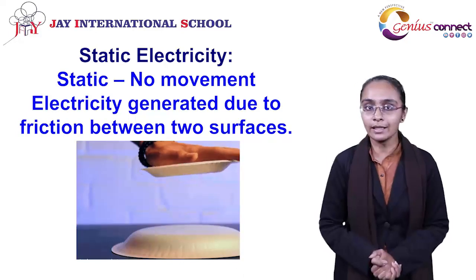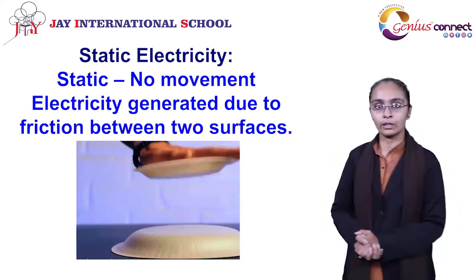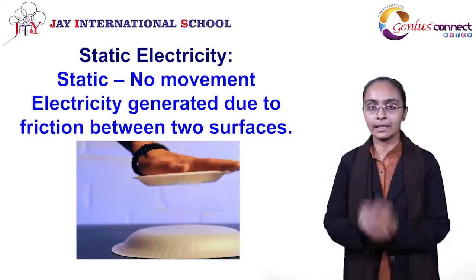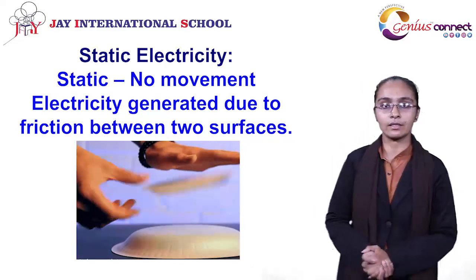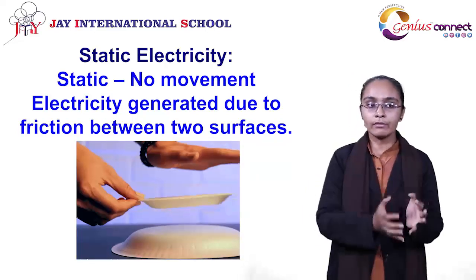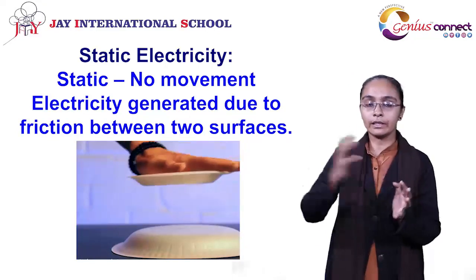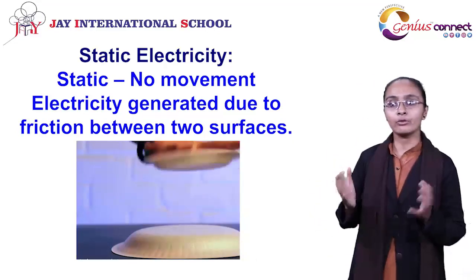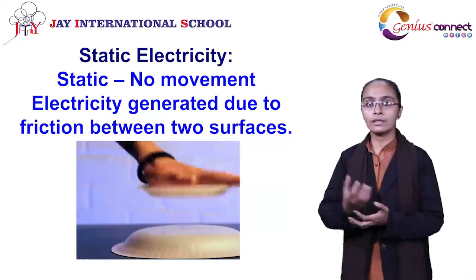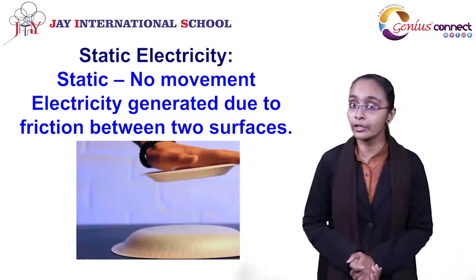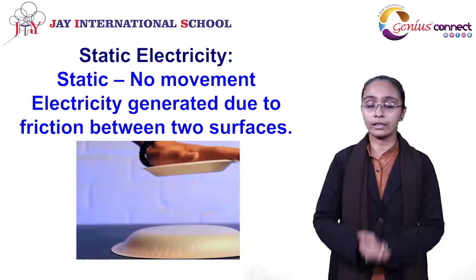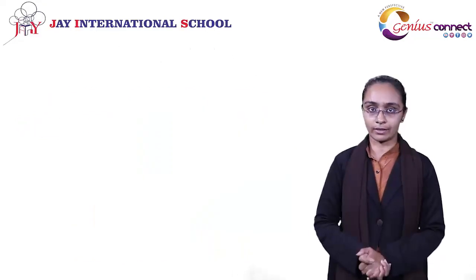When we consider static electricity, static means when the charge is not moving — when charge is at one place — at that time the electricity which is generated is known as static electricity. When we understand that term differently: when any two surfaces come in contact with each other and both surfaces have a certain friction between them, at that time the electricity generated is known as static electricity.